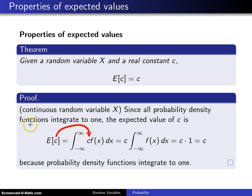Now, all probability density functions have to integrate to one, so this integral turns out to be just one, which means the expected value of c is c, and we have proven the result.